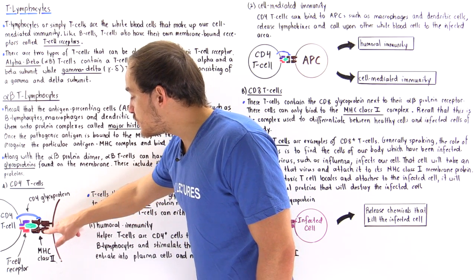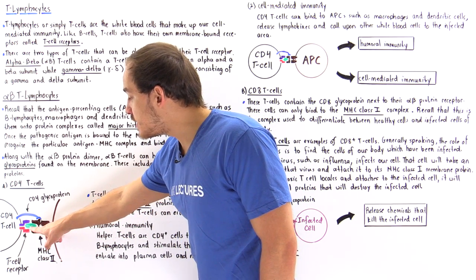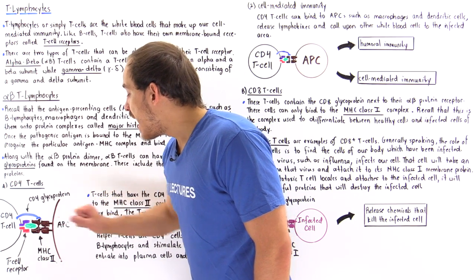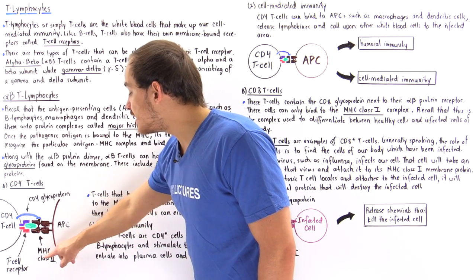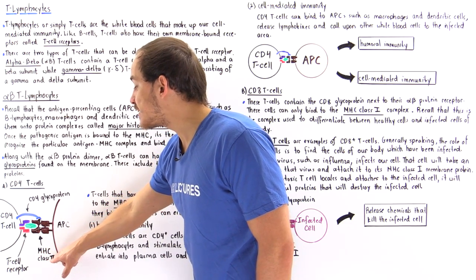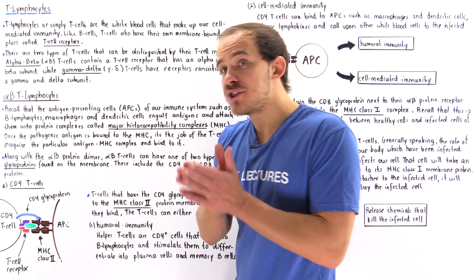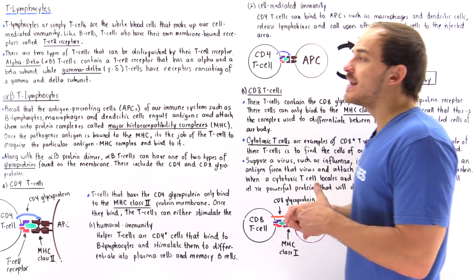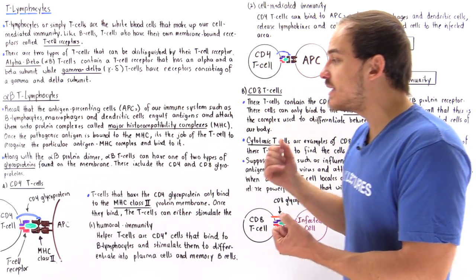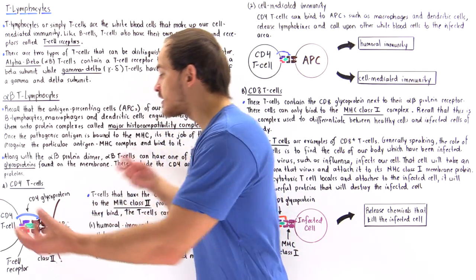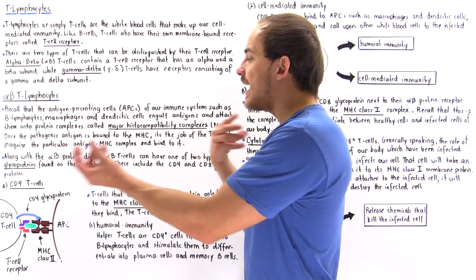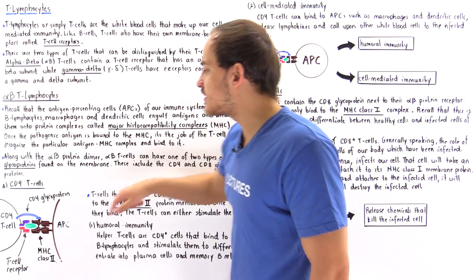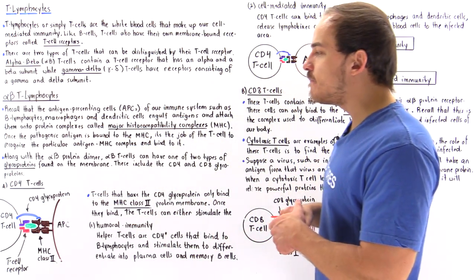This is the MHC class II complex and the green part is our antigen. Once the antigen binds onto the MHC class II complex, only then can the CD4 alpha-beta T lymphocyte actually approach and bind onto this complex, forming an interaction between the APC and our T lymphocyte.